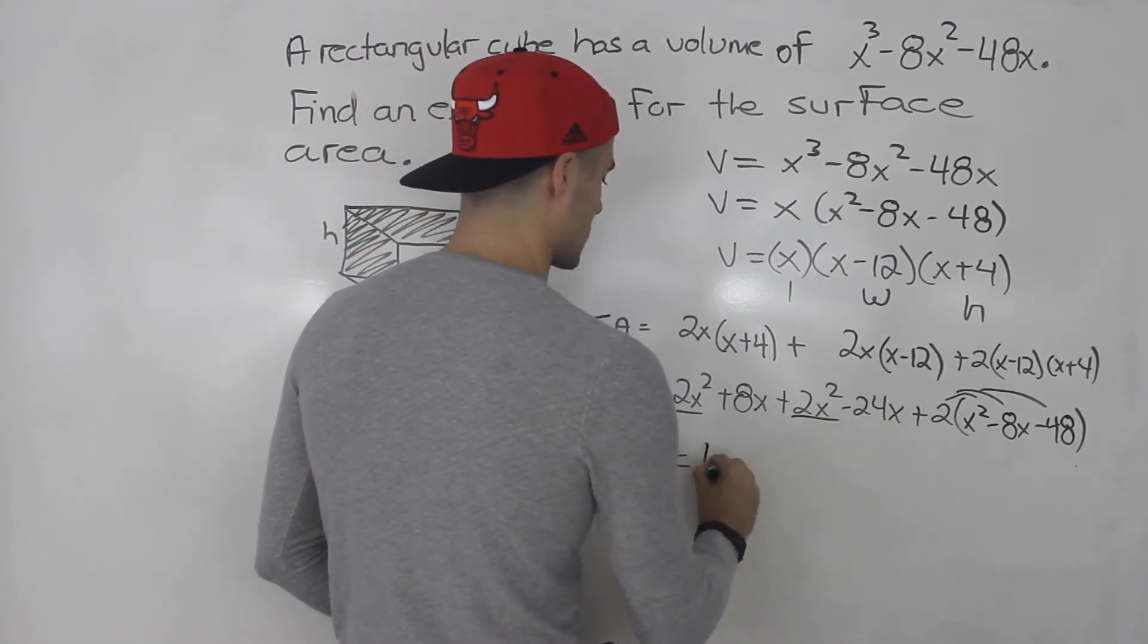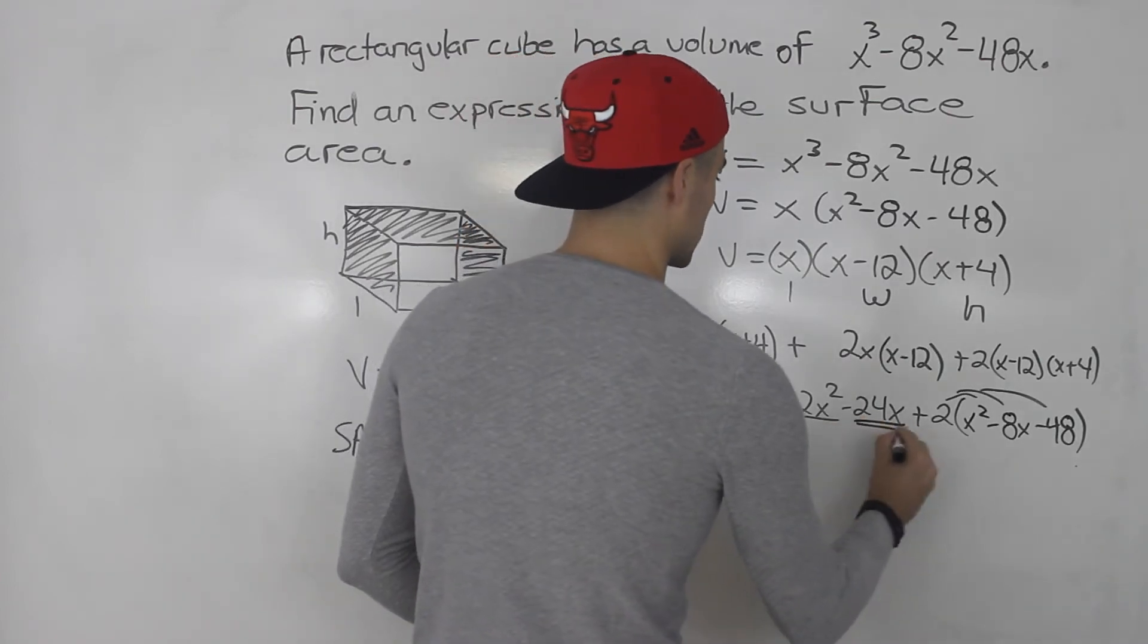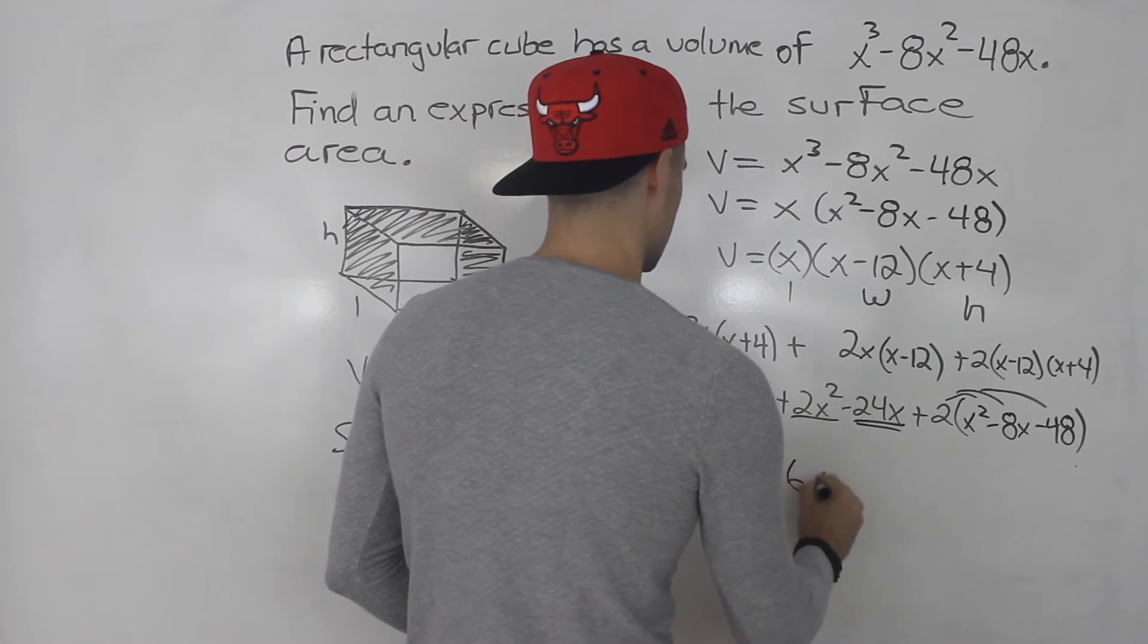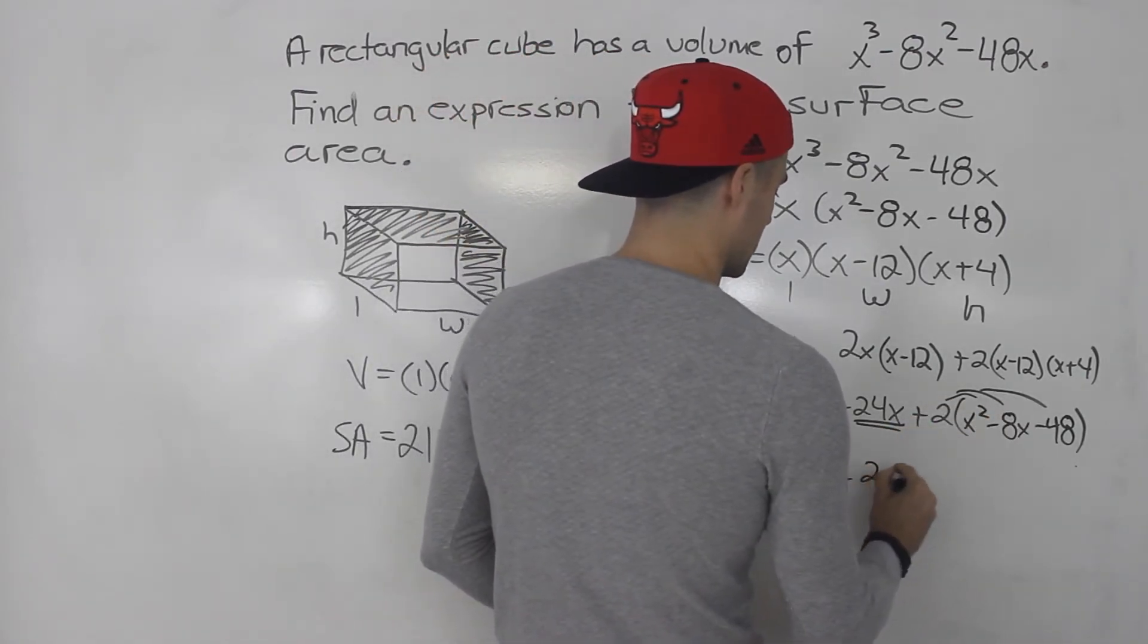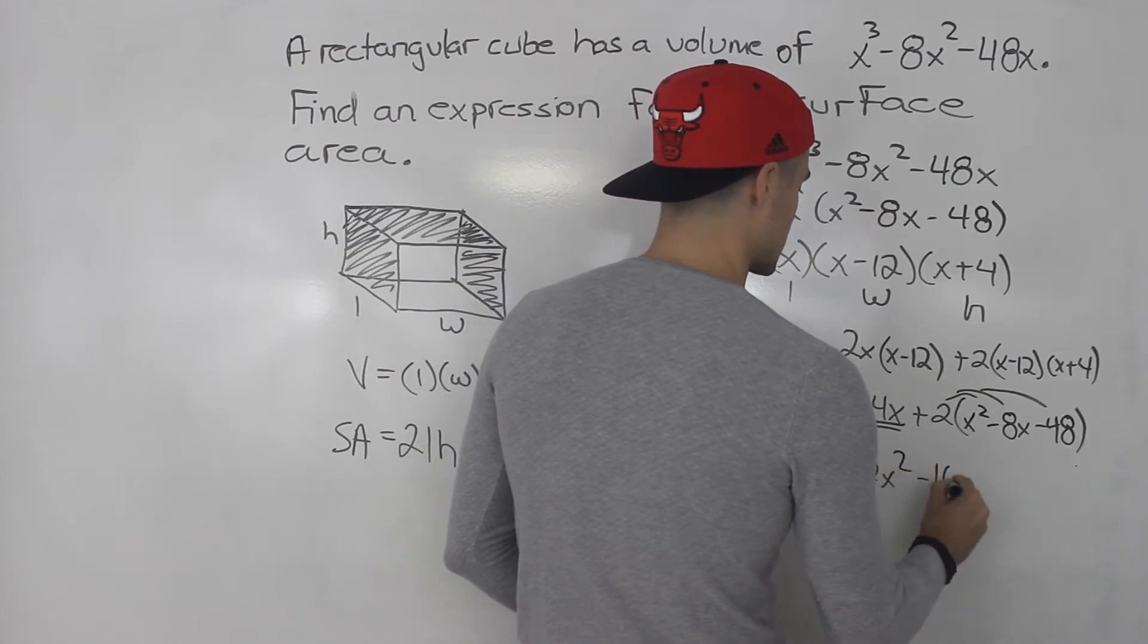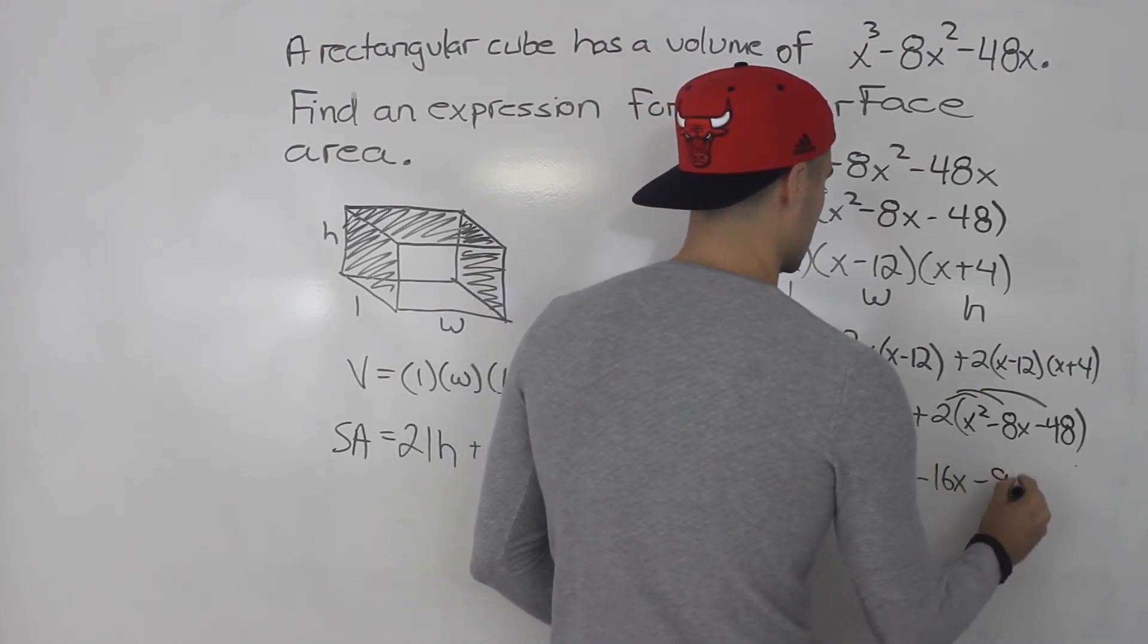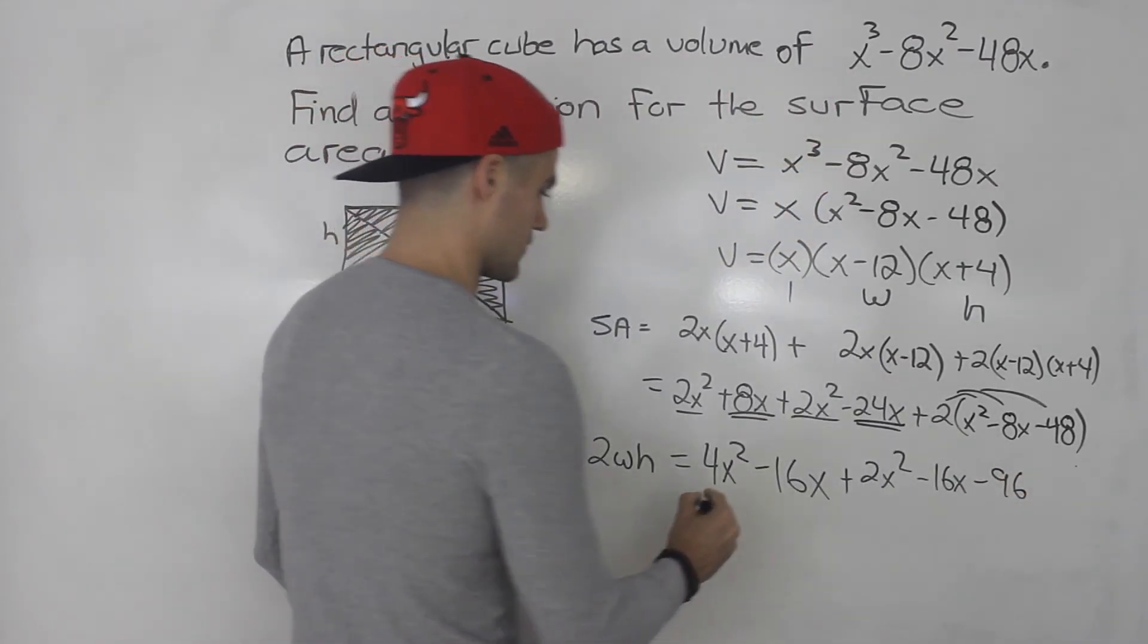So 2x squared plus 2x squared, that's 4x squared. And then we got 8x minus 24x, which would give us minus 16x. And then over here, plus 2x squared minus 16x minus 96, like that.